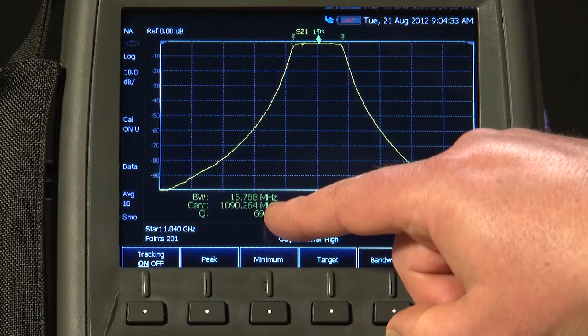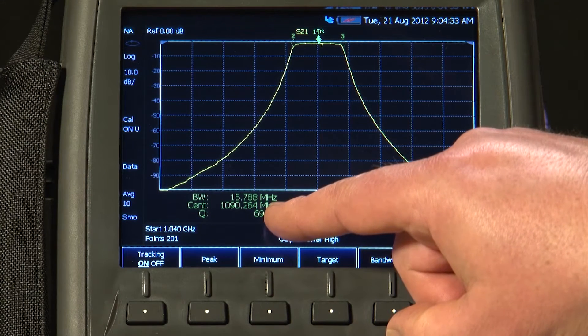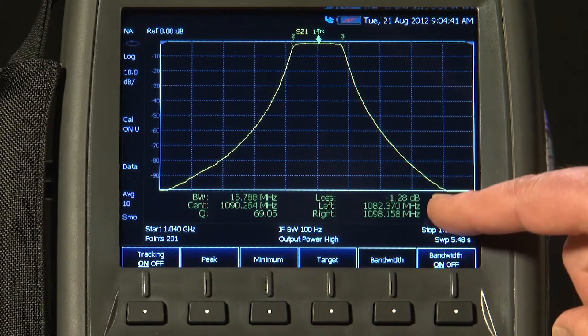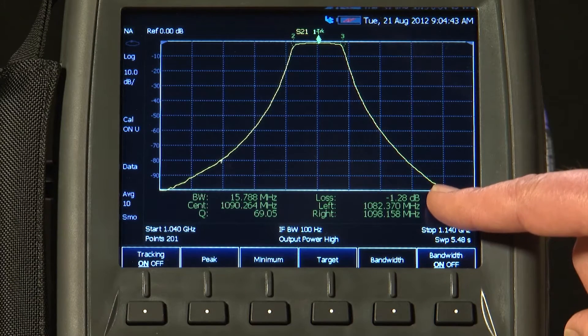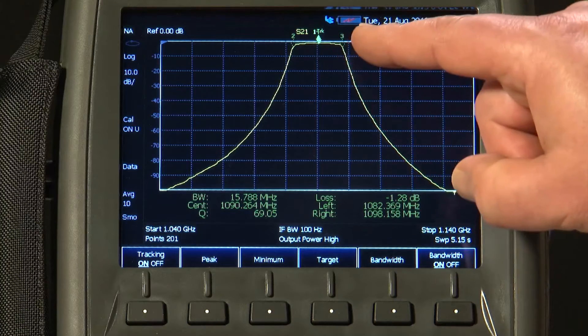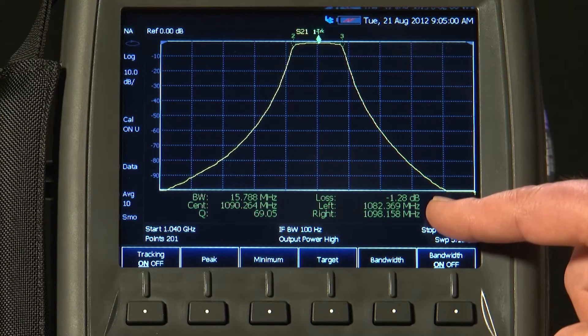The center frequency is 1.09 GHz. The Q-Factor is 69. The minimum insertion loss is 1.28 dB, and you can see the frequencies of the left and right 3 dB bandwidth markers.